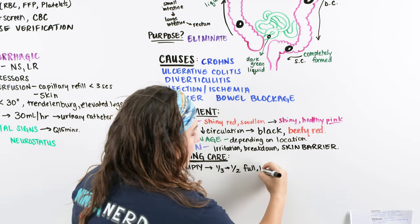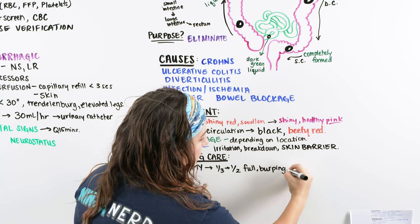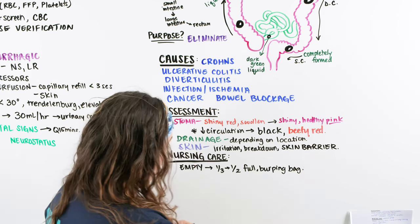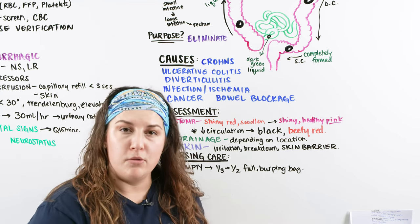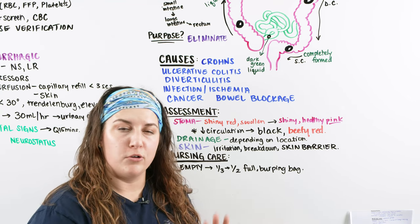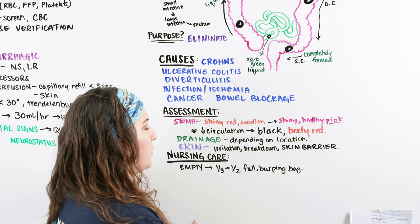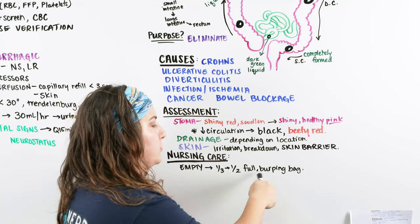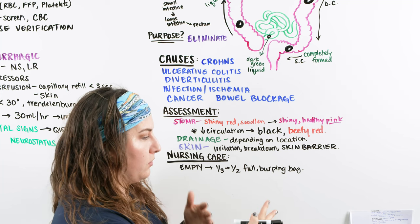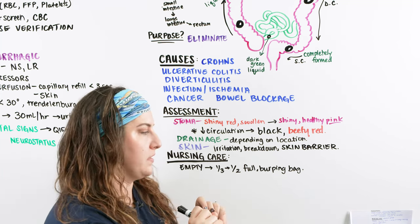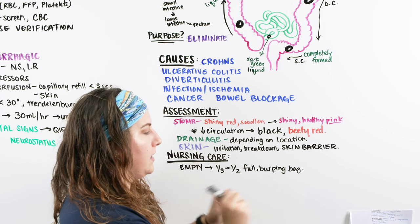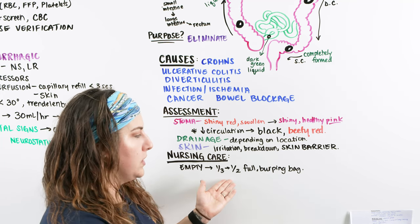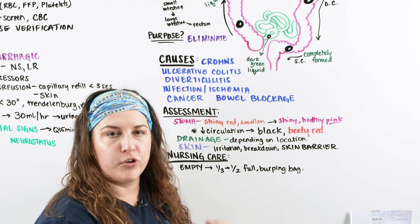We also want to talk to the patient about burping the bag — meaning letting out gas. Sometimes depending on the food they eat, things like broccoli, beans, or cauliflower can create more gas, which creates a little balloon bubble in the bag. The patient can burp the bag by pulling back some of the colostomy bag to expel the air and then clip it back. Teach them which foods to limit or avoid to reduce excess gas.